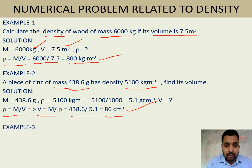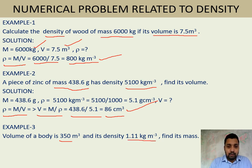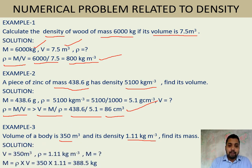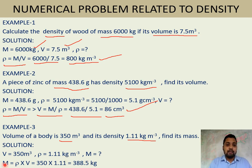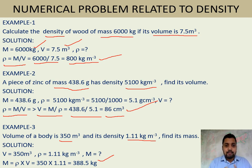Third example: The volume of a body is 350 m³ and its density is 1.11 kg/m³. Find the mass. Data given: V = 350 m³, ρ = 1.11 kg/m³, find mass. From ρ = m / V, we get mass = ρ × V = 1.11 × 350 = 388.5 kg. This covers finding density, mass, and volume from the formula.